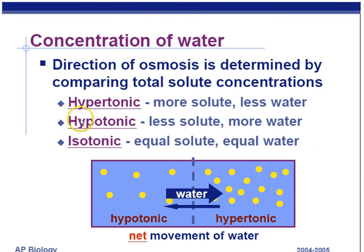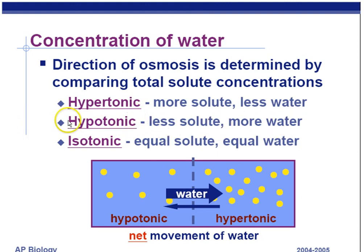Concentration of water: hyper means above, and tonic refers to solutes, so hypertonic means above solutes — more dissolved stuff, which means less water. Hypotonic means less dissolved stuff — hypo means under, like a hypodermic needle (under the skin) — less solute, which means more water. The most hypotonic solution is pure distilled water. Isotonic means equal solute concentrations on both sides. These terms describe water in comparison to other water separated by a barrier like a cell membrane.